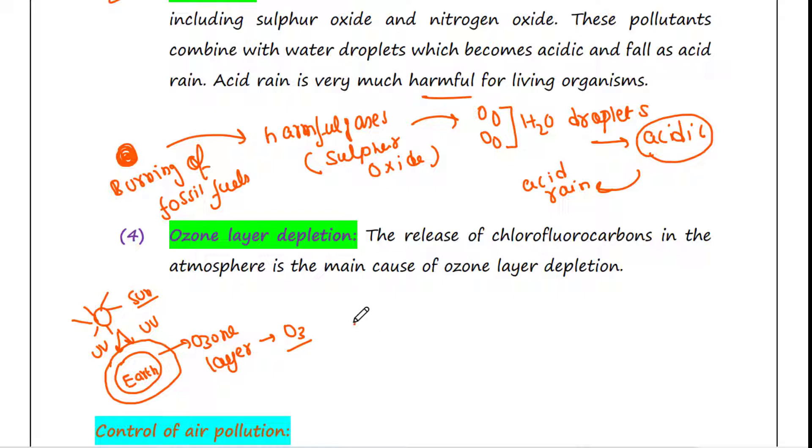Nowadays this ozone layer is getting broken down due to some compounds such as chlorofluorocarbons. Chlorofluorocarbons degrade ozone layer. If ozone layer gets degraded, it won't be able to absorb UV and UV will reach us easily, which is very much lethal for all living organisms.